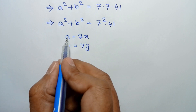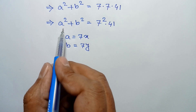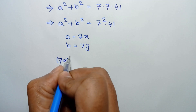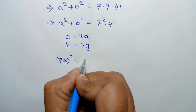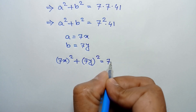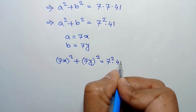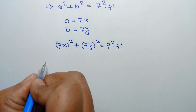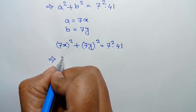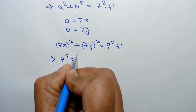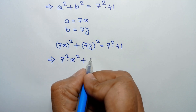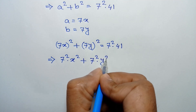Substituting the values of a and b into the equation, we have (7x)² plus (7y)² equals 7² times 41. That gives us 7² times x² plus 7² times y² equals 7² times 41.